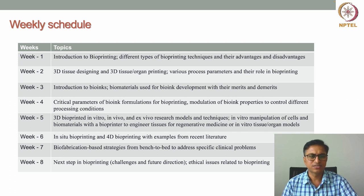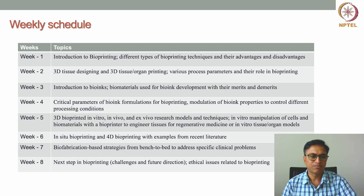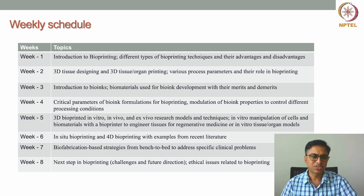In week three we'll discuss what are the different types of bioinks available, what is bioink, and what are the different types of biomaterials that are used for development of these bioinks with the merits and demerits of these different types of bioinks for particular target tissue applications. We'll also discuss the critical parameters of bioink formulation for bioprinting, and how we can select and optimize different parameters for bioink formulation to suit a particular type of bioprinting application.